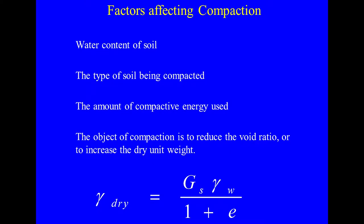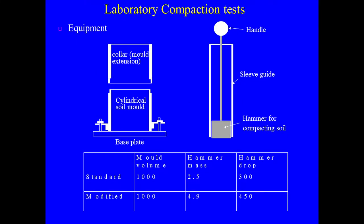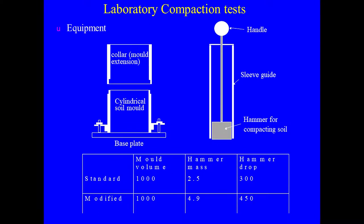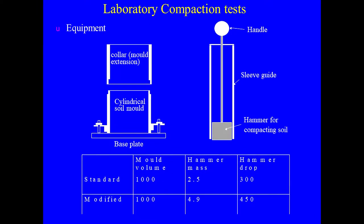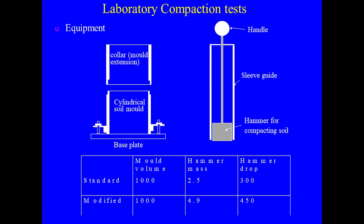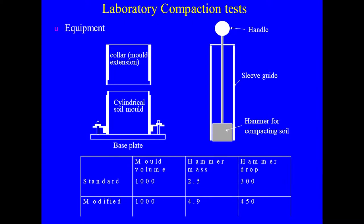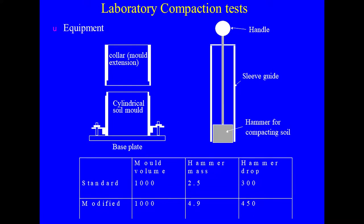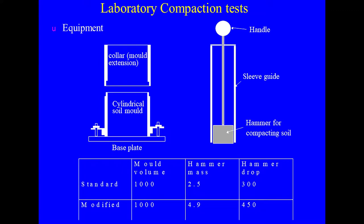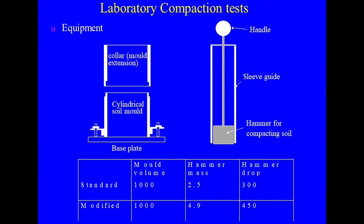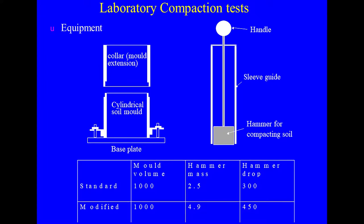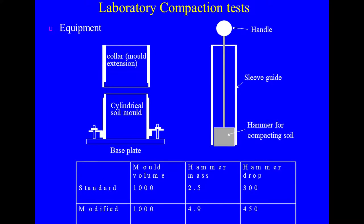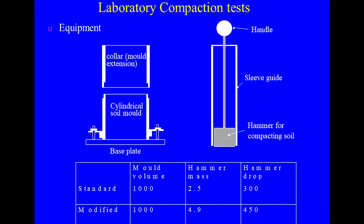In the laboratory compaction test, there is a mold called the Proctor mold — both Standard and Modified. The mold volume is 1000 cc. The hammer mass for Standard is 2.5 kg and for Modified it is 4.9 kg. The hammer drop is 300 mm and 450 mm respectively. The figure shows the handle, sleeve guide, and hammer used for compacting soil.